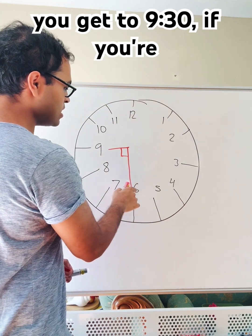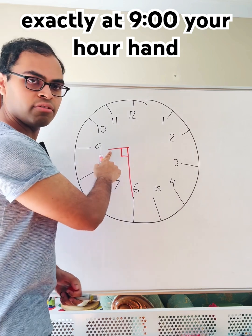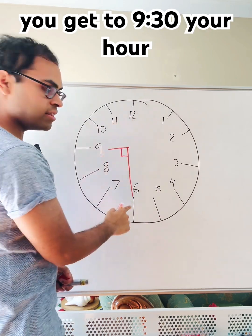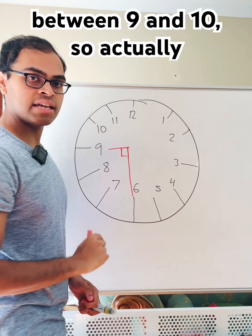that when you get to 9:30, if you're exactly at 9 o'clock, your hour hand will be at 9. But when you get to 9:30, your hour hand is going to be halfway between 9 and 10.